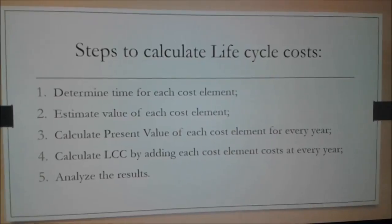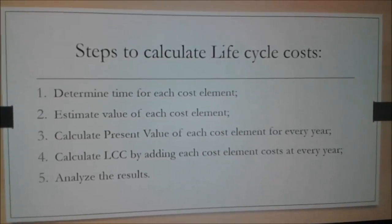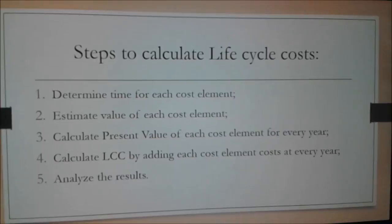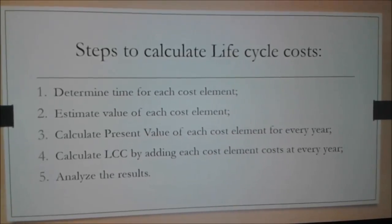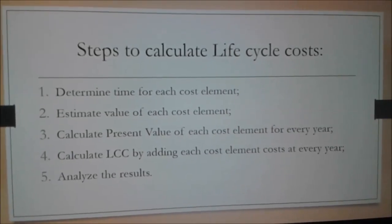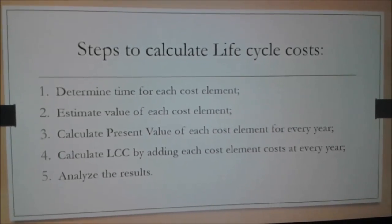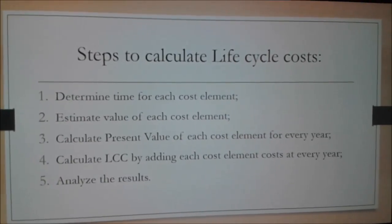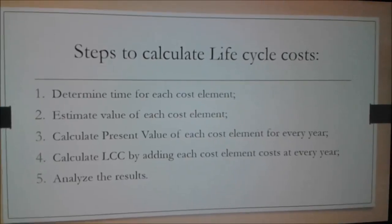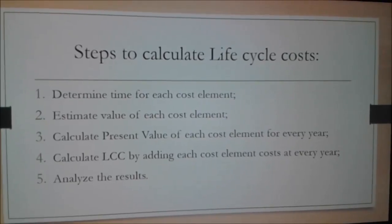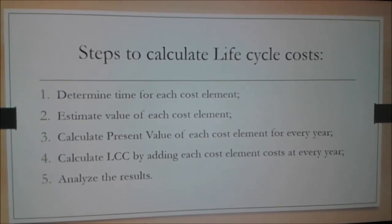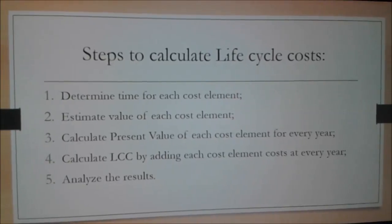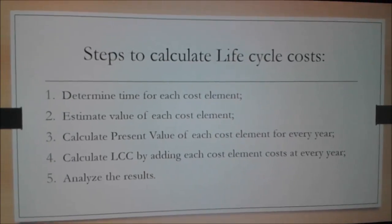Then we need to calculate the present value of each cost element for every year. Once we know the present value at every year for each cost element, we add them together — and these are going to be our life cycle costs. Finally, we analyze the results, and companies usually prefer the option that includes the lowest life cycle costs.